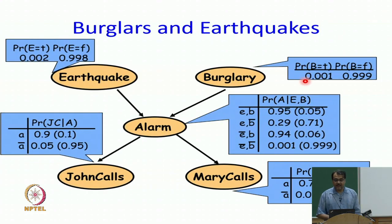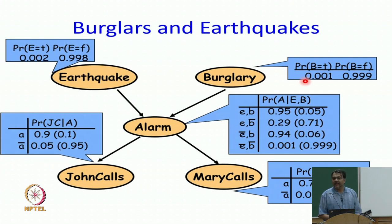What I am going to show you now is that those 10 parameters have the full power for representing the full joint distribution. That is the beauty of this. For that we have to ask some very basic independence questions. Is burglary and earthquake independent of each other? By knowing earthquake, burglary does not change.